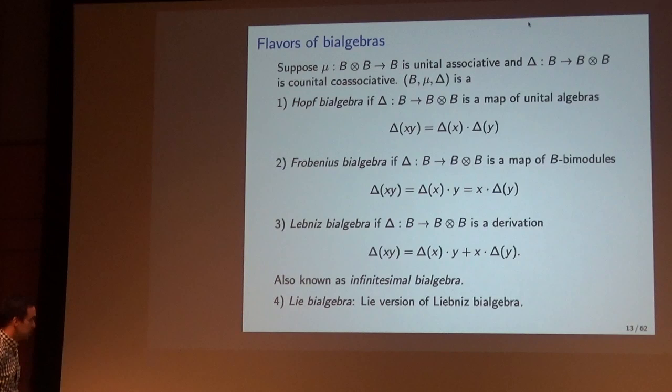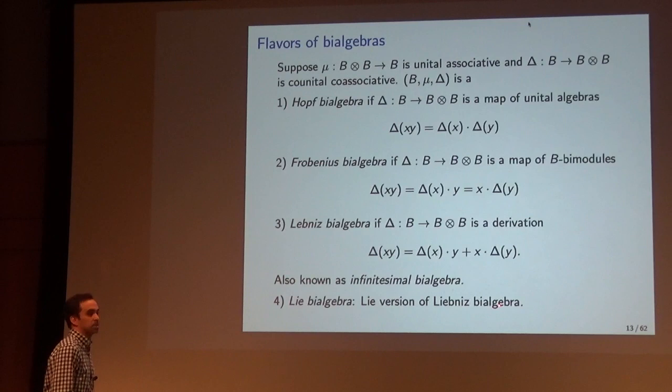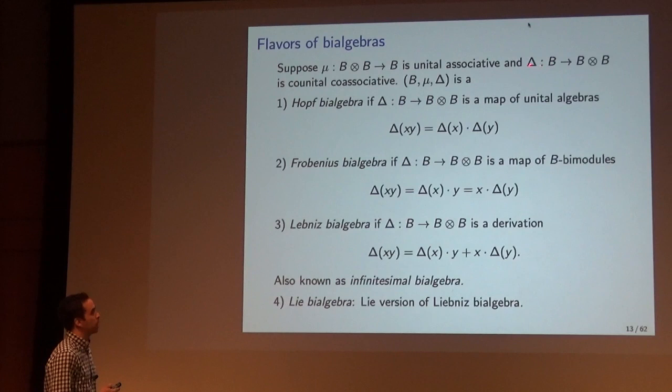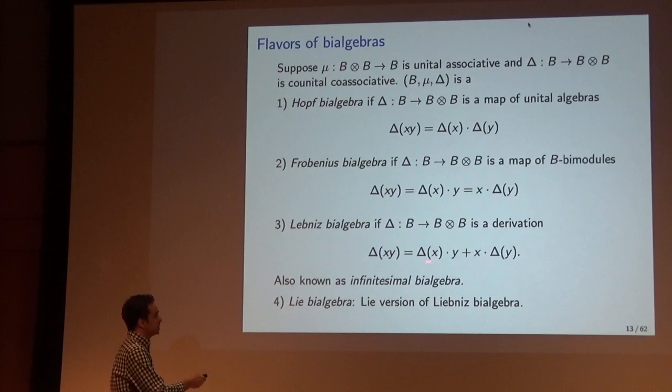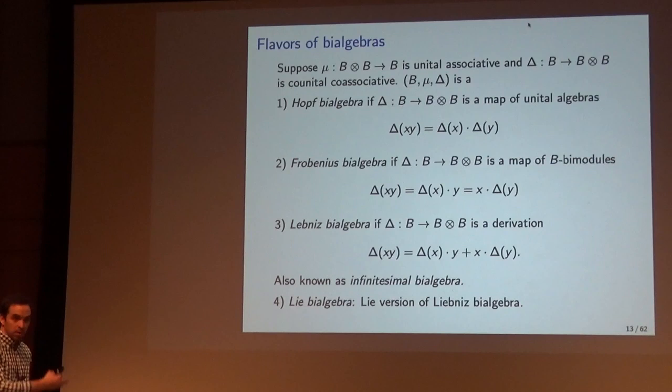A Lie bi-algebra is a Leibniz version of a Leibniz bi-algebra. The product and co-product are now required to be a Leibniz bracket and a Leibniz co-bracket, and the derivation equation is interpreted using the adjoint action of the Leibniz algebra itself. So these are the four flavors of bi-algebras that will be featured in this talk. This will be a survey-like talk — the plan is a bit ambitious, but I'm happy to discuss more details during the break.